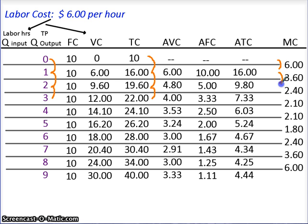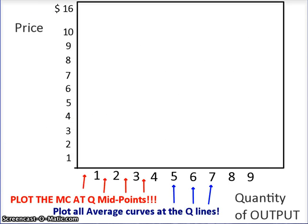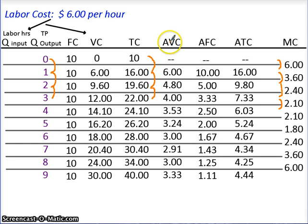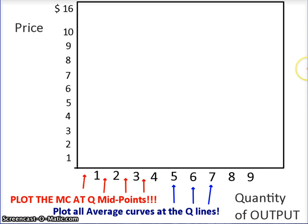We're moving from one level to another level, and this will come into play when we do our graphing, which we'll do right now. I want you to graph the average variable cost, average fixed cost, average total cost, and marginal cost — three averages and the marginal. Get a piece of graph paper and label the axes as shown.